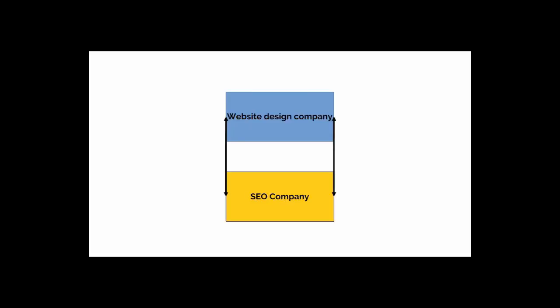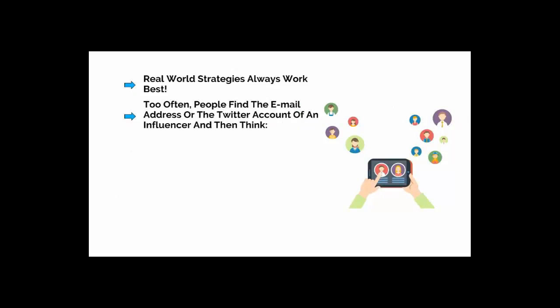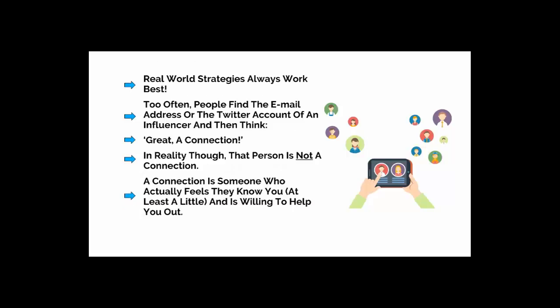Here's a quick tip for any kind of influencer marketing: real world strategies always work best. Too often, people find the email address or the Twitter account of an influencer and think, great, a connection. In reality, though, that person is not a connection. A connection is someone who actually feels that they know you, at least a little, and who is willing to help you out. You can accomplish this in two minutes if you meet someone in person, whereas it takes a lot longer to get to that level via emails. This is why networking events and trade shows are so valuable. Find the influencers, introduce yourself, and have a human chat.